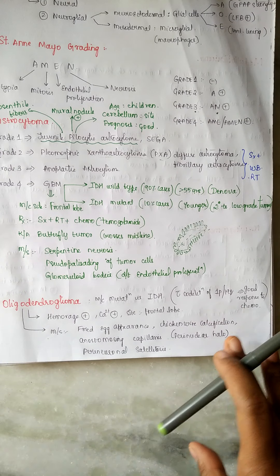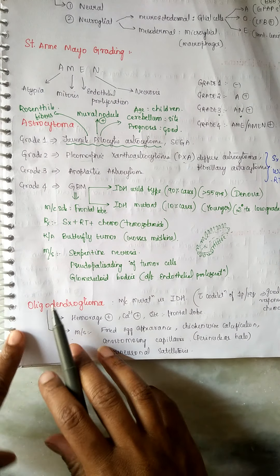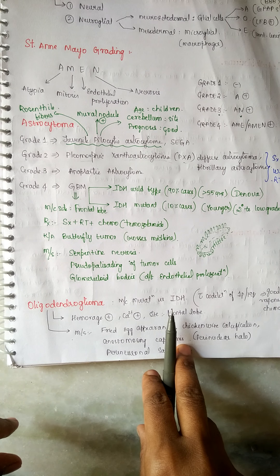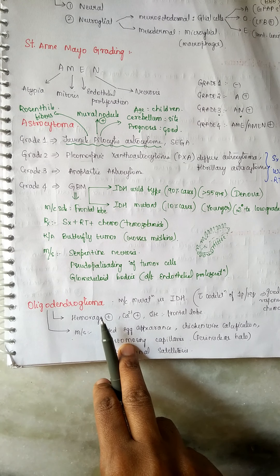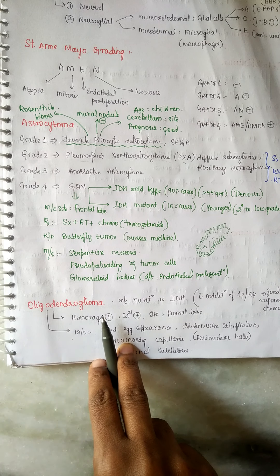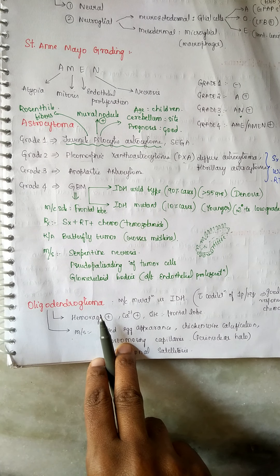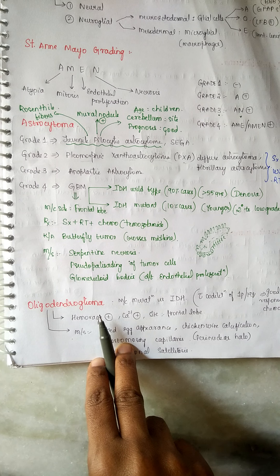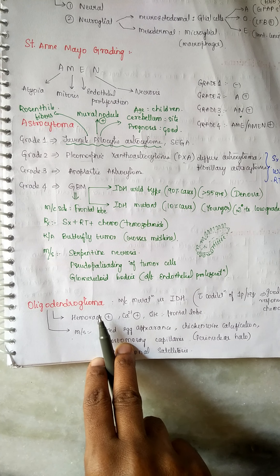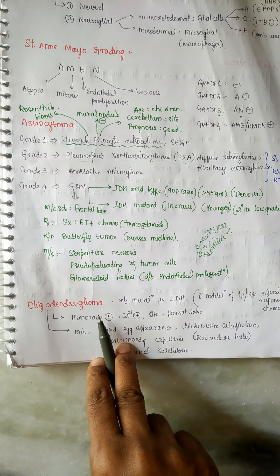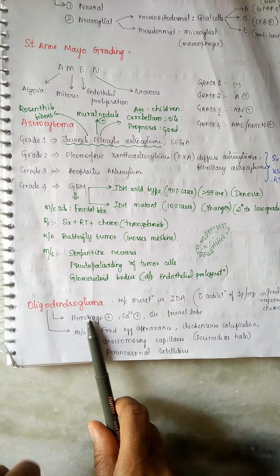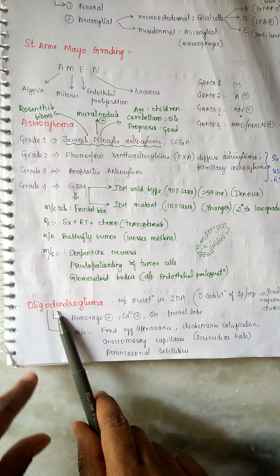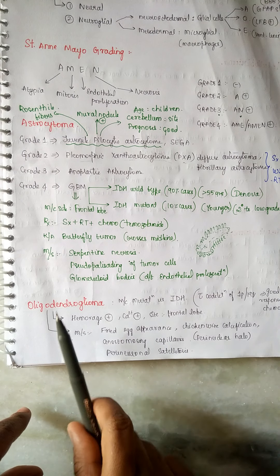Now let's move to the next tumor — oligodendroglioma. The most common mutation is IDH. An important feature is that calcium deposition can be present. There are only three main brain tumors that can occur with calcium deposits. Oligodendroglioma may show calcium deposition and hemorrhage. The most common site is also the frontal lobe.